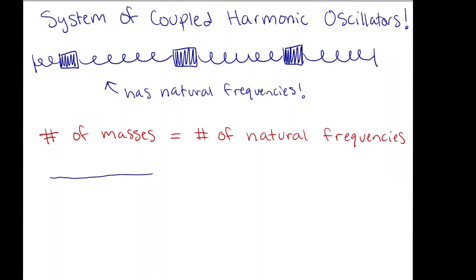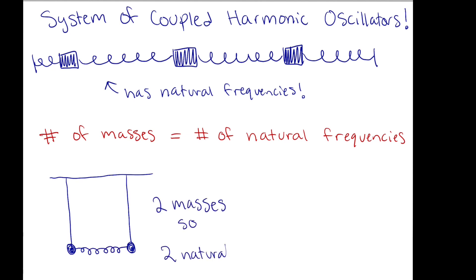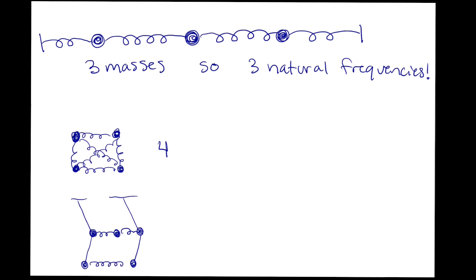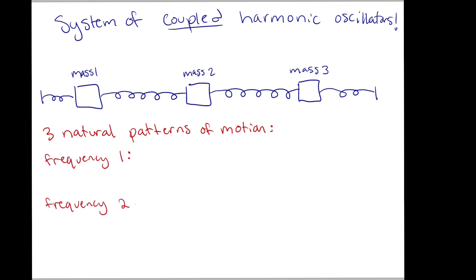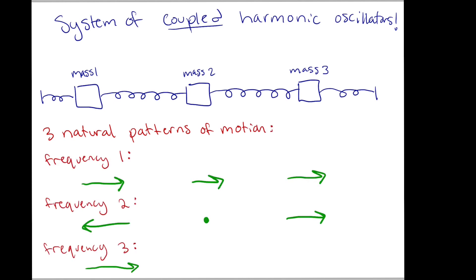Just like normal oscillators, these systems will have some natural frequencies in which all of the oscillators move in sync. The more objects you add to a system, the more natural frequencies it will have. For instance, if you connect two pendulums with a spring, that system will have two natural frequencies. Four masses — four natural frequencies. Five masses — five natural frequencies, and so on. Each natural frequency of a system has a unique pattern of motion associated with it.